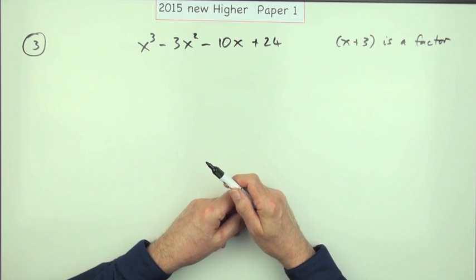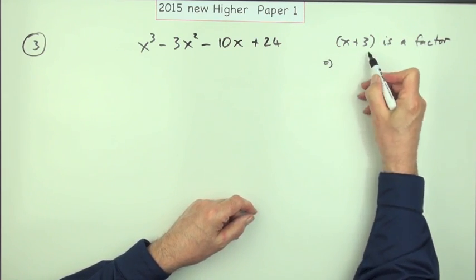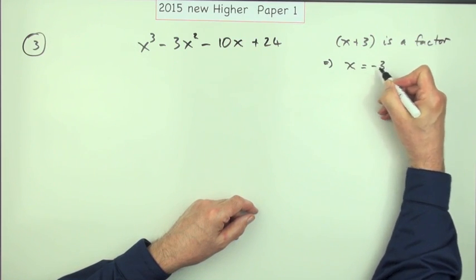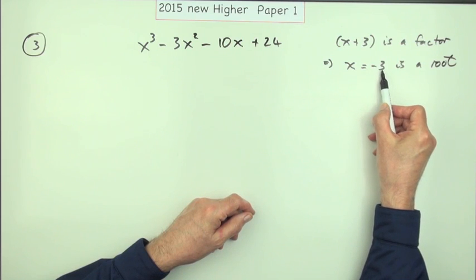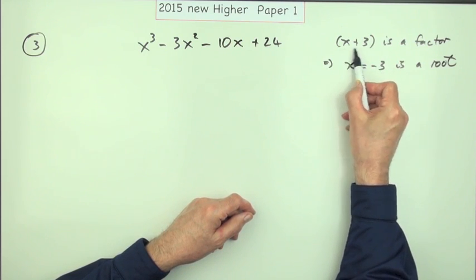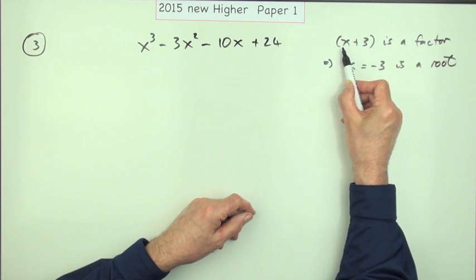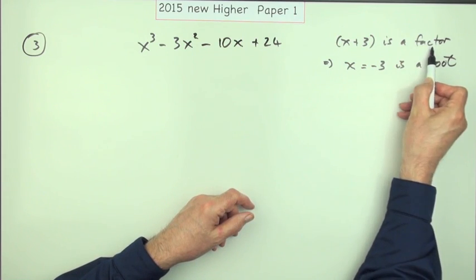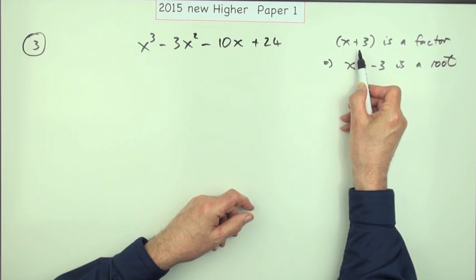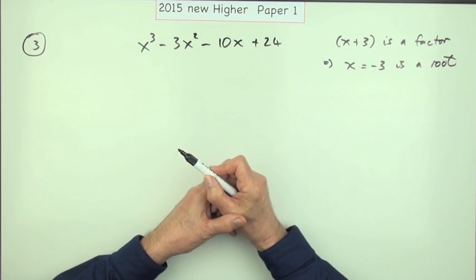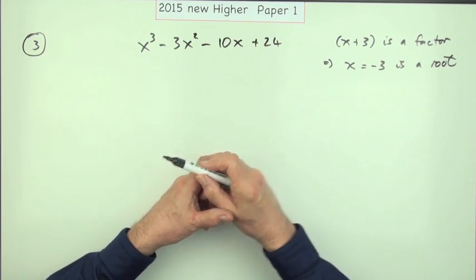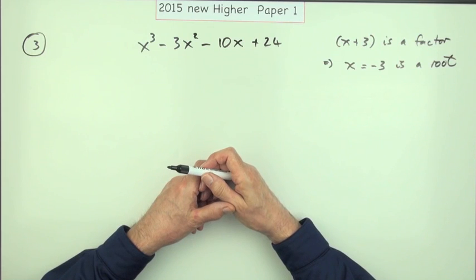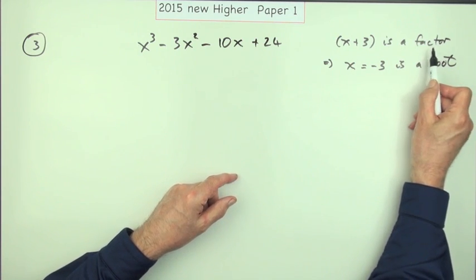So: x plus 3 is a factor means that x equals negative 3 is a root. Notice how it derives negative 3 — when x is negative 3, this bracket comes to zero. So if that's a factor of the cubic and that comes to zero, then the whole expression should come to zero. There are two ways: you can divide it in, or you can check if the expression equals zero at x equals negative 3. In fact that's how they start it off, though it's a bit laborious — really you should do the division because it says 'factor.'